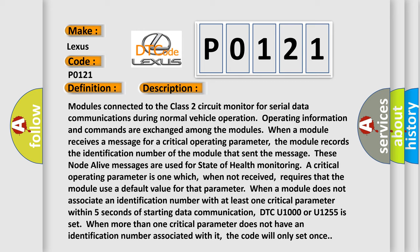When more than one critical parameter does not have an identification number associated with it, the code will only set once.